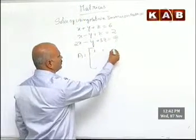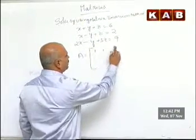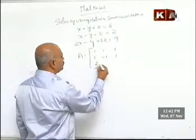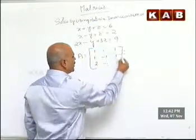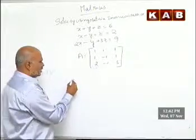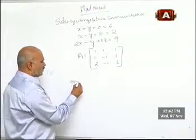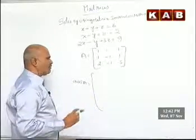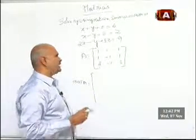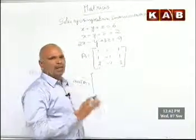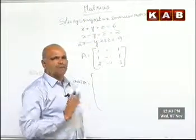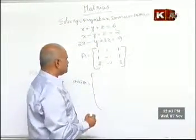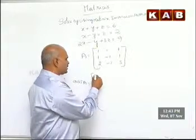A is already discussed. A is: 1, 1, 1; and again 1, minus 1, 1; 2, minus 1, 3. That is A. Now I have to find out adjoint A. Here I am telling one method by which we can find adjoint A directly. It is applicable in the intermediate board examination — it is very easy. Here we write the sign scheme.